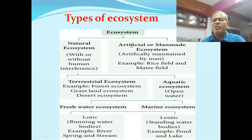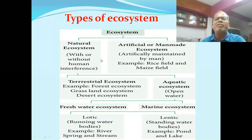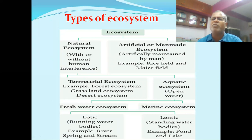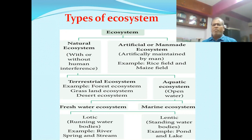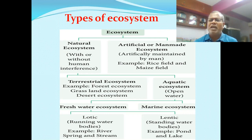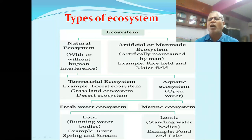A natural ecosystem may have the interference of humans or not, but it is formed naturally by a gradual process. Artificial ecosystem is artificially maintained by man — rice fields, maize fields, sugarcane fields and similar cultivable crops come under artificial or man-made ecosystem. Ponds or lakes created by humans also come under artificial ecosystem.